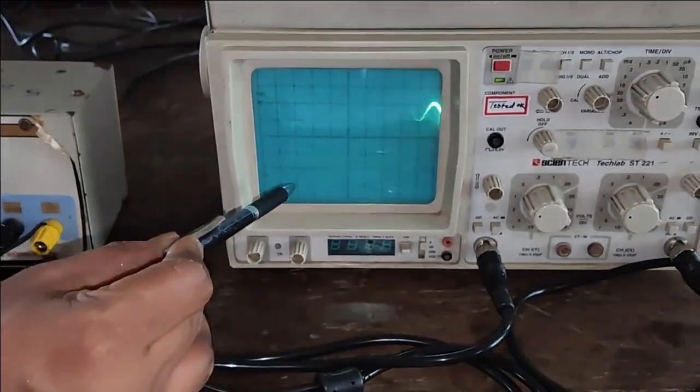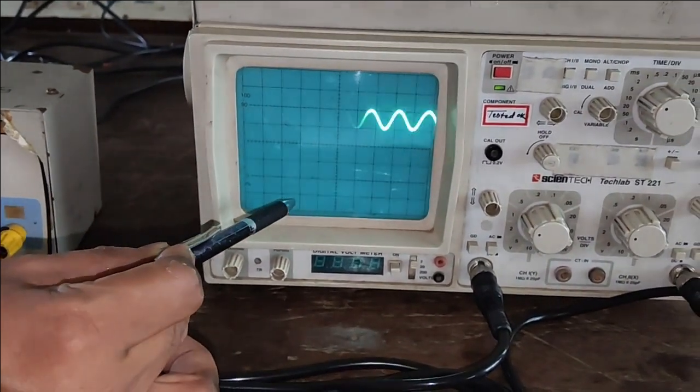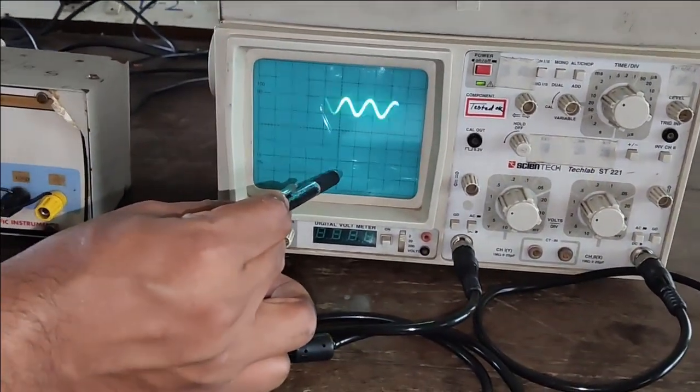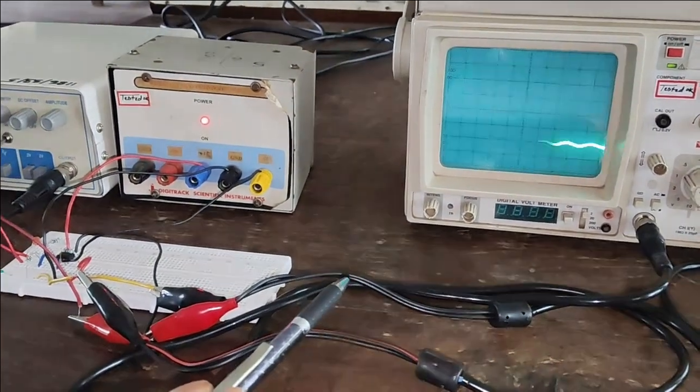The input is connected to channel 1 of the CRO. Now the output of the filter is connected to channel 2 of the CRO. Now let's vary the frequency and observe the output.